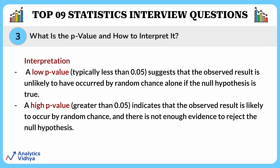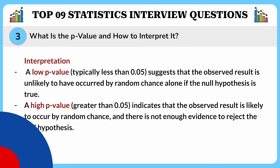Let's see how we interpret the results. If the p-value is low — usually less than 0.05 — it suggests your results are not likely just luck and you might have found something real. If the p-value is greater than 0.05, it suggests that your results could easily happen by chance and you might not have strong evidence for your findings.